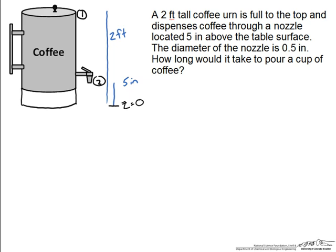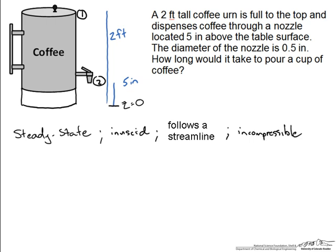First of all we assume steady state. That means when the coffee starts flowing the volumetric flow rate of that coffee is not going to change while we fill the cup. Second we are going to assume that it is inviscible. There are no viscous effects involved with this. Third we are going to say that the flow follows a certain streamline. And lastly we are going to say that it is incompressible. In this case all of these assumptions hold to be pretty accurate.